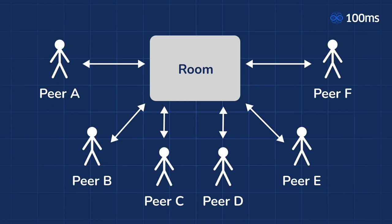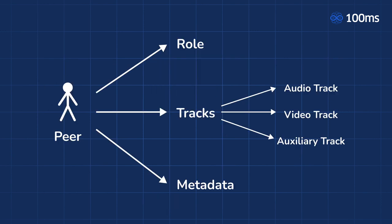Let us take a look at some of the basic concepts we need to use the 100ms SDK. First is a room — you can think of a room like a virtual place where you can join and interact with your fellow participants. Next is a peer. A peer is what you would call a participant in 100ms terminology. A peer can join or leave the room at any time. Every peer has three things associated with them. First is a role. Since we are building a simple app, all peers in the room would have the same role. But if you're interested in what you can do with roles, there is an awesome blog post you should check out.